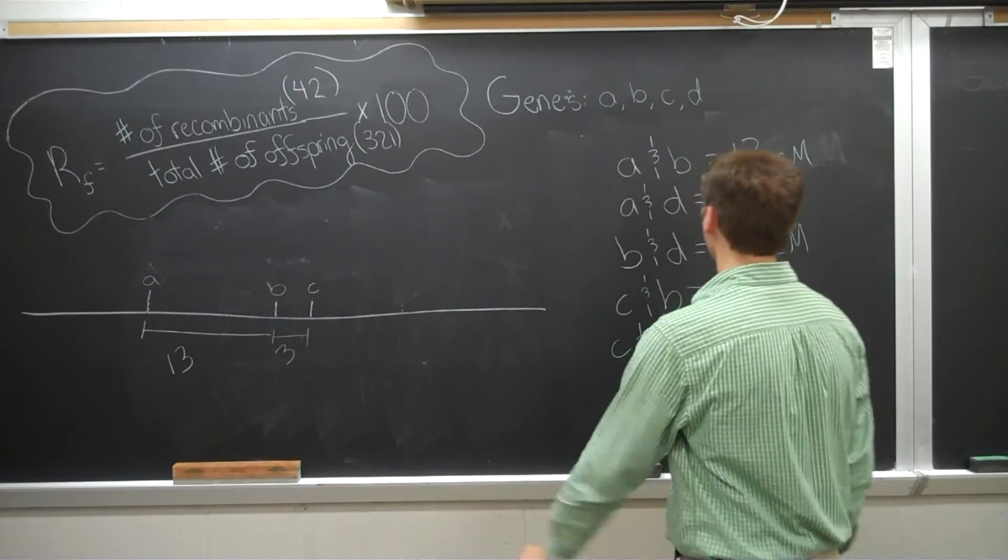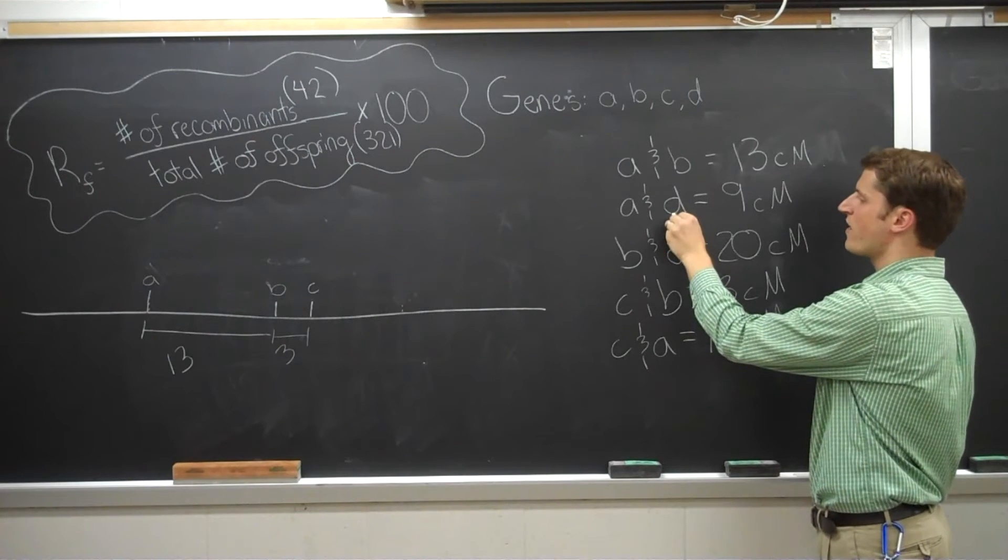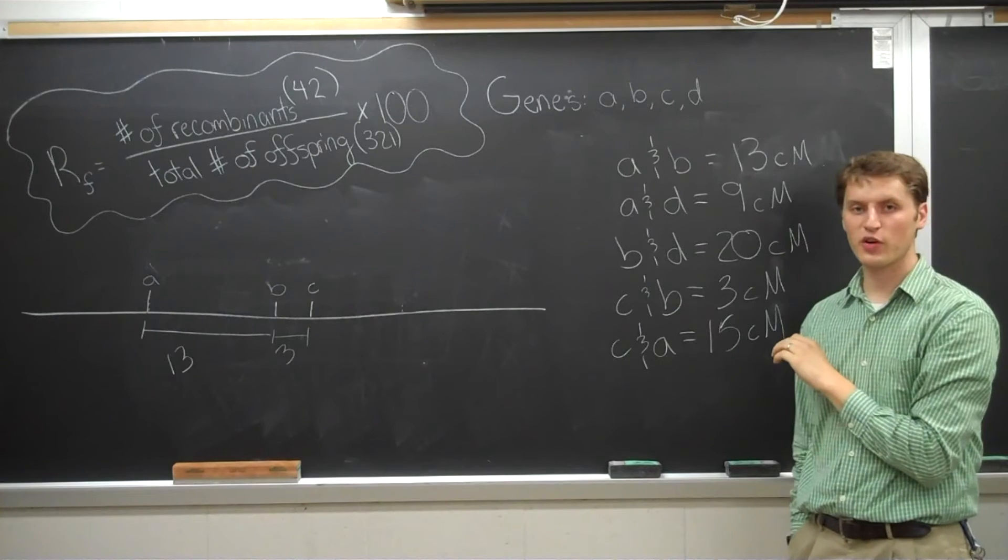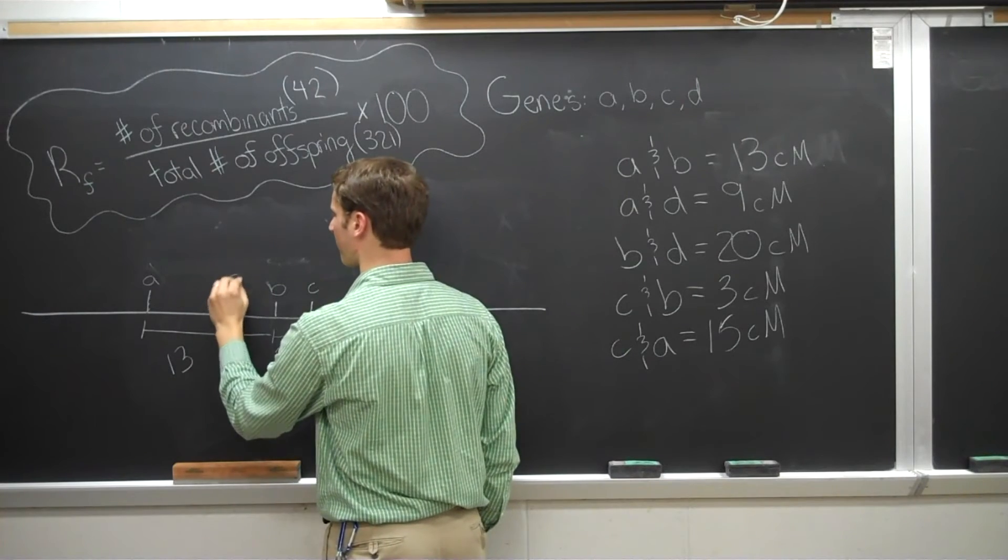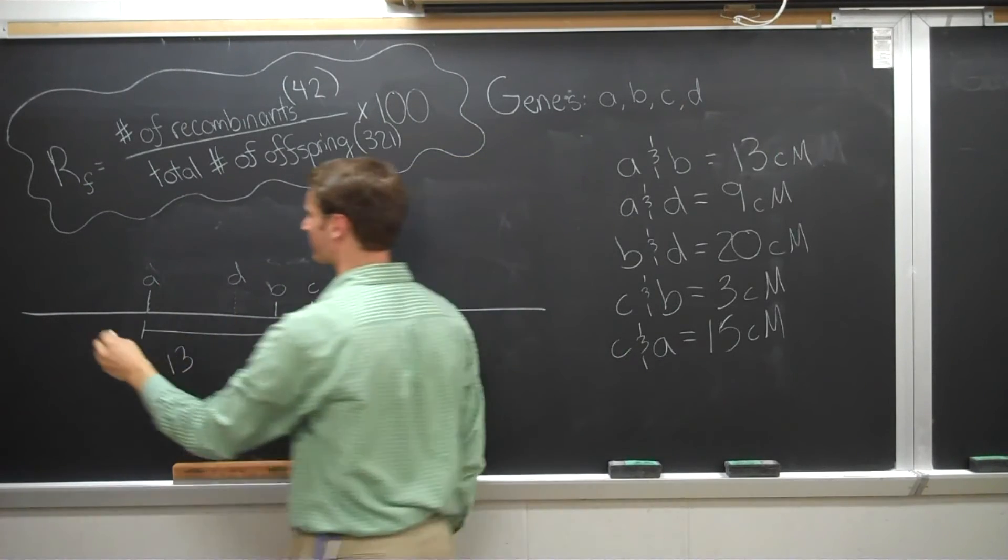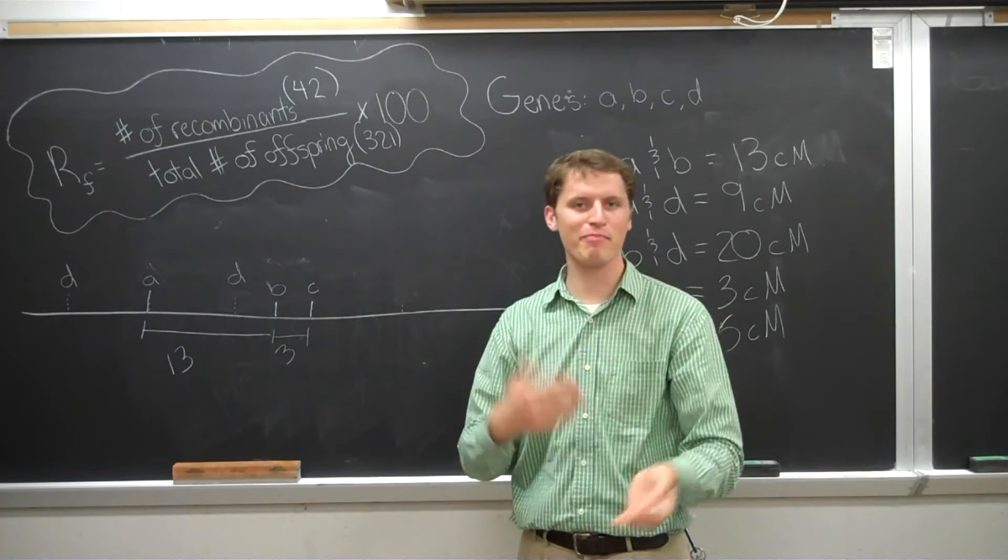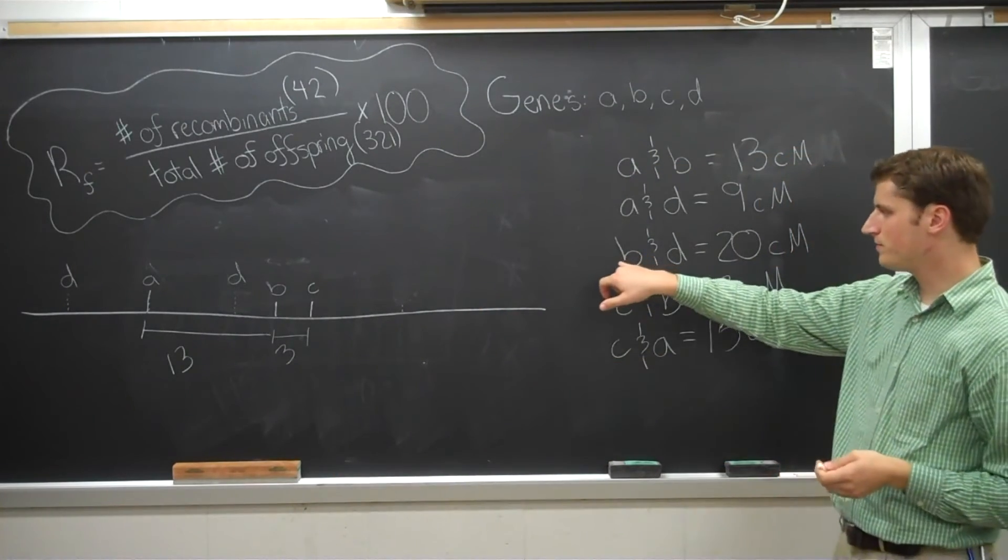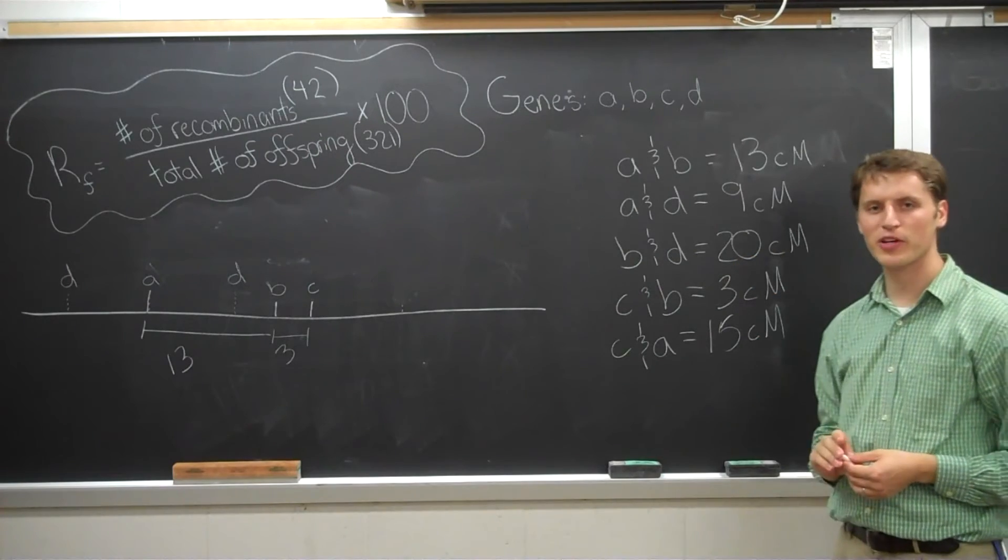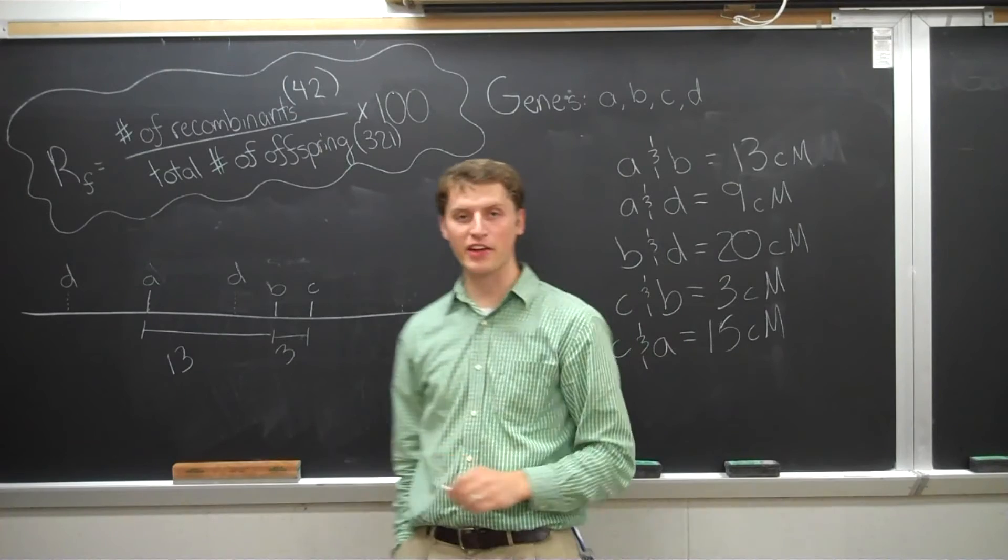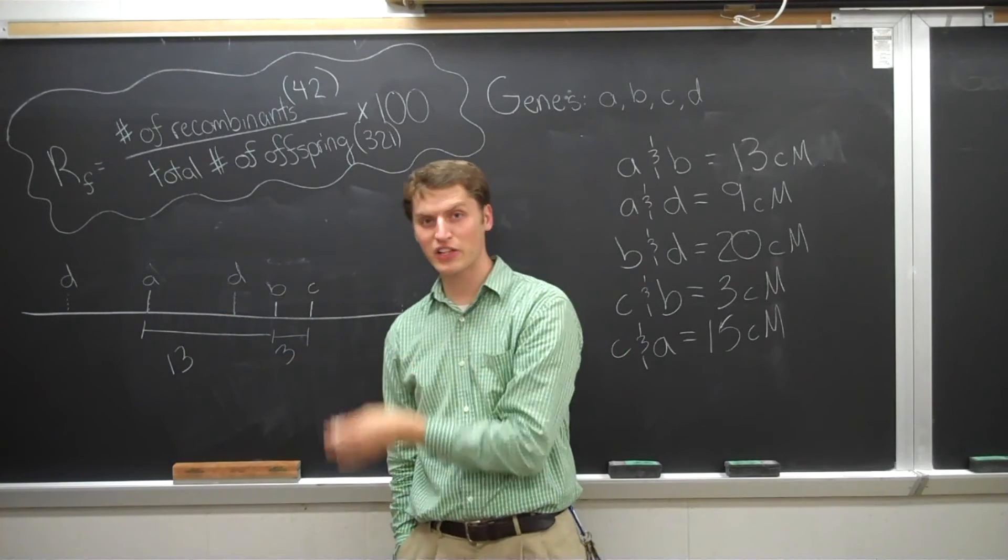All right, let's find out where D goes. So let's pick any of these crosses that use D. We'll use A and D. We know that D is located 9 centimorgans away from A. So it could be about right here, or it could be the other direction, right there. So which one is right? Well, we need another comparison for D. So let's see. Right here. B and D. D is 20 centimorgans away from B. So let's build a hypothetical situation. Assuming that D is located right here. That would put it very close to B.